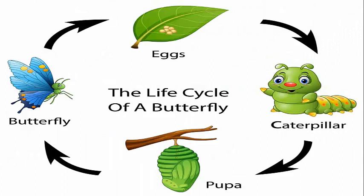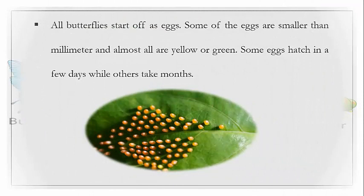Now you can see the life cycle of a butterfly. First it lays eggs, then it becomes a caterpillar, then it becomes a pupa, and after that it becomes an adult butterfly. All butterflies start off as eggs. Some eggs are smaller than a millimeter, and almost all are yellow or green in color. Some eggs hatch in a few days while others take months to hatch.